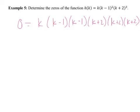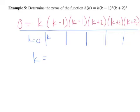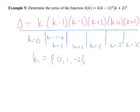Setting each factor equal to zero: k equals zero, k minus 1 equals zero gives k equals 1, and k plus 2 equals zero gives k equals negative 2. We have three unique solutions: zero, one, and negative two. One is a double root and negative two is a triple root. On a test, you should indicate double or triple roots, because the follow-up question will ask what the graph looks like around those points.